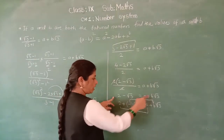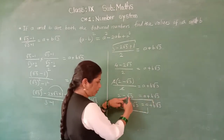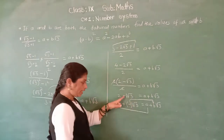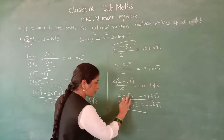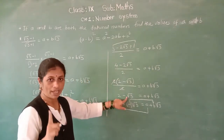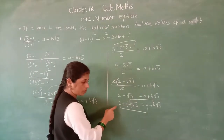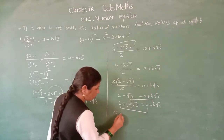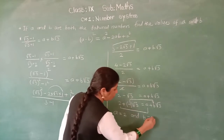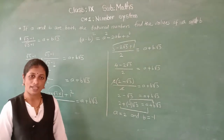A is 2, and what is B? B — there is no separate number; the coefficient of root 3 is there. So where is B present? B is present here only — the coefficient of root 3 is 1, but with a minus sign so B is minus 1. So here A equals 2 and B equals minus 1. In this way we have to find the values of A and B.